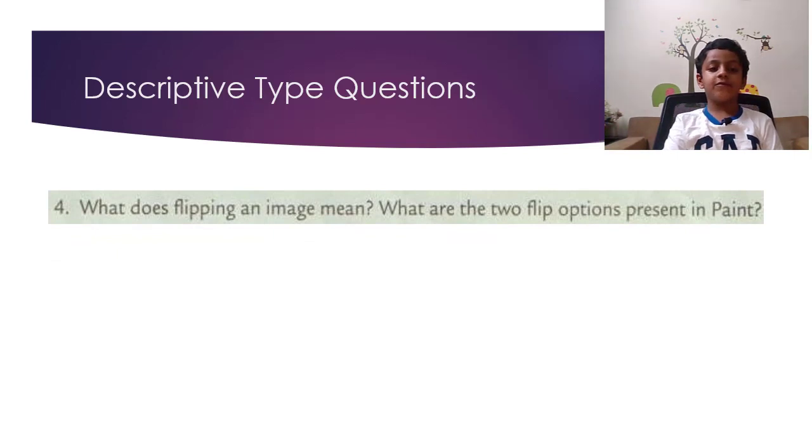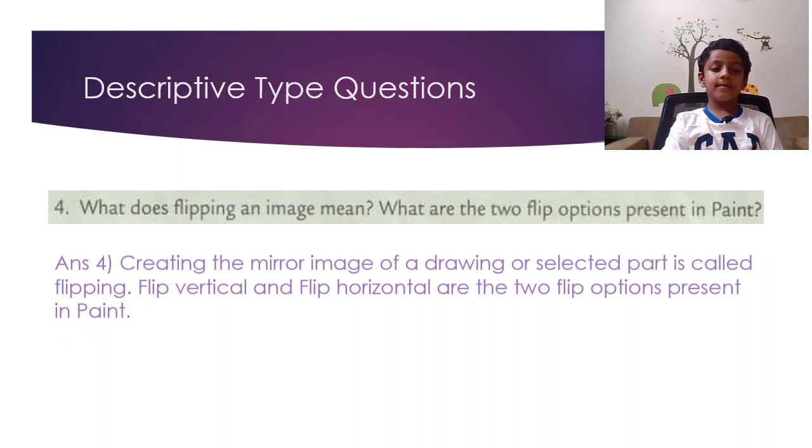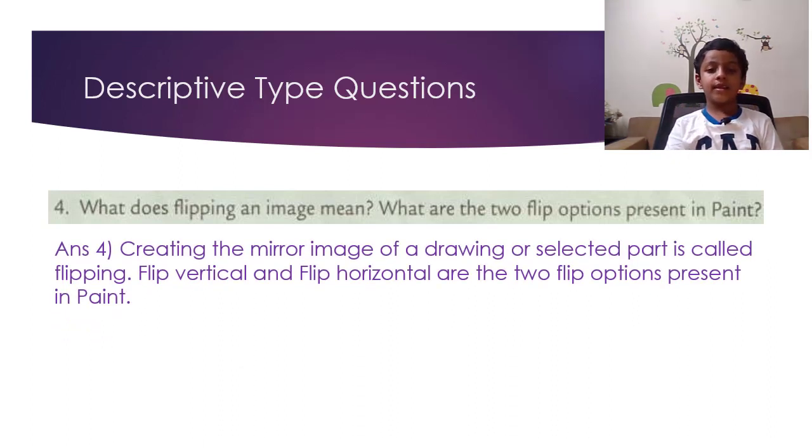Question 4. What does flipping an image mean? What are the two flip options present in Paint? So the answer is creating the mirror image of a drawing or selected part is called flipping. Flip vertical and flip horizontal are the two flip options present in Paint.